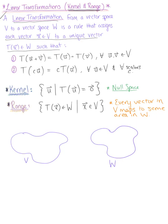Let's think about the kernel graphically. From the definition of the null space, for the zero vector that exists in vector space W, we have the set of all x's that are being mapped by the transformation T to that zero vector.